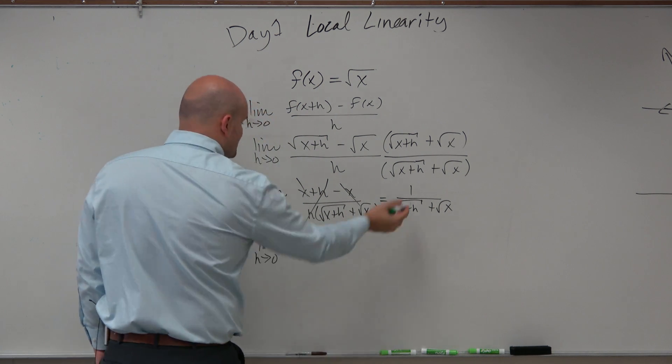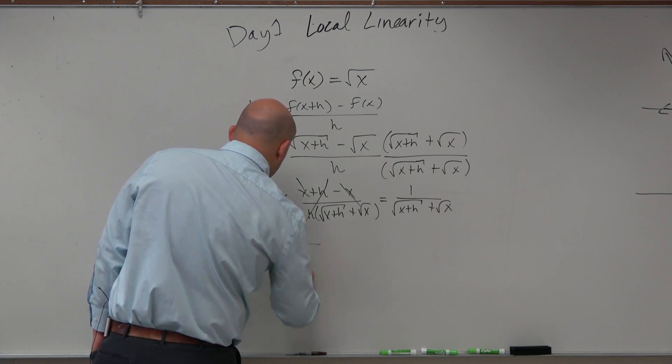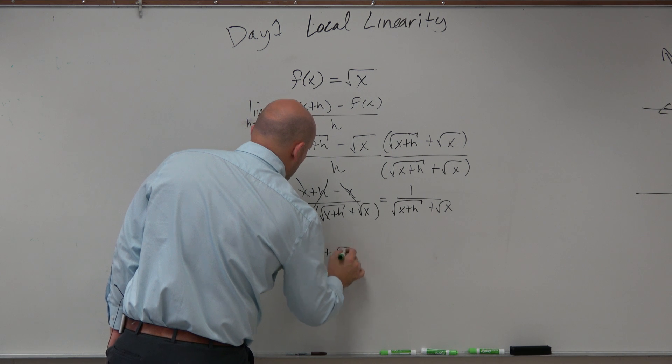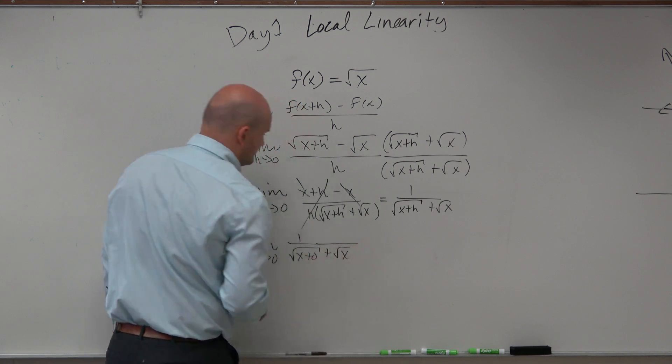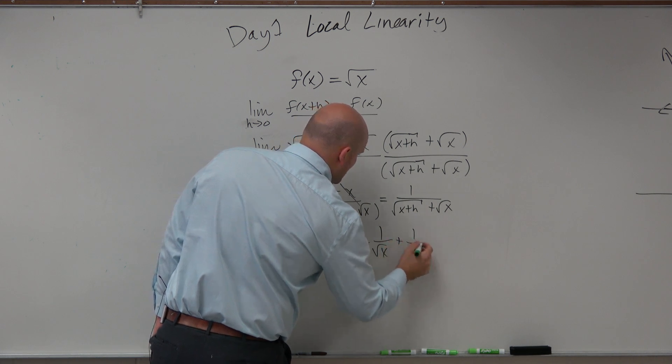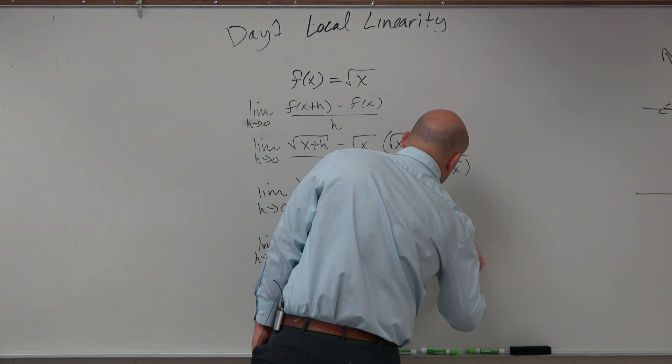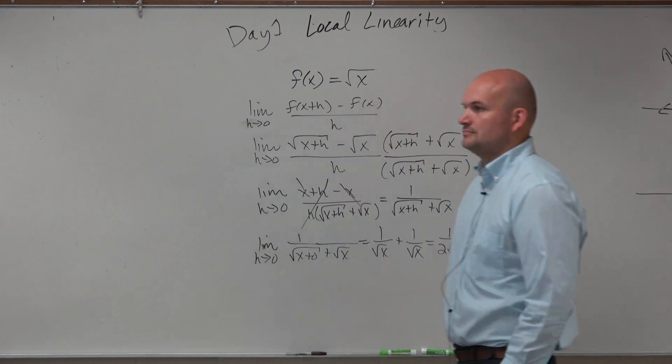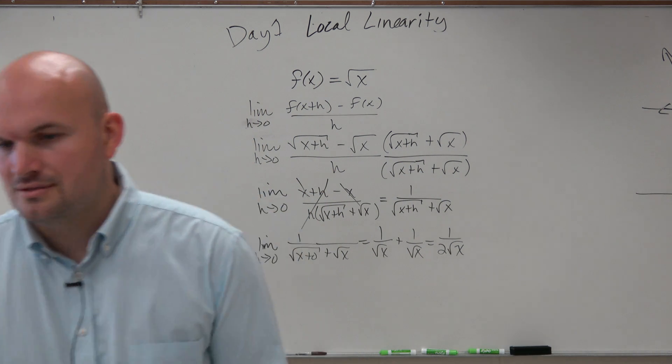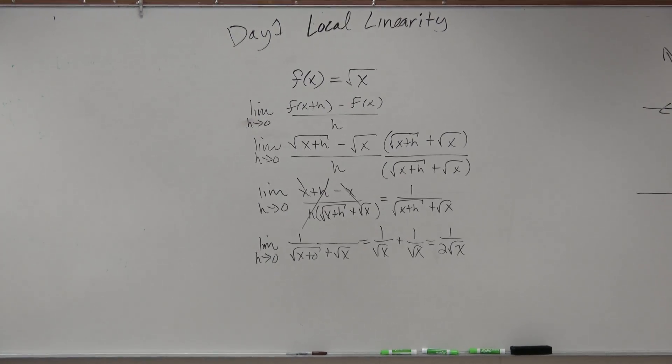As h approaches 0, let's substitute in 0 for h, and we get 1 over the square root of x plus 0 plus the square root of x, which equals 1 over square root of x plus 1 over square root of x equals 1 over 2 square root of x. Ah, cool. So, the slope of that line is 1 over 2 square root of x.